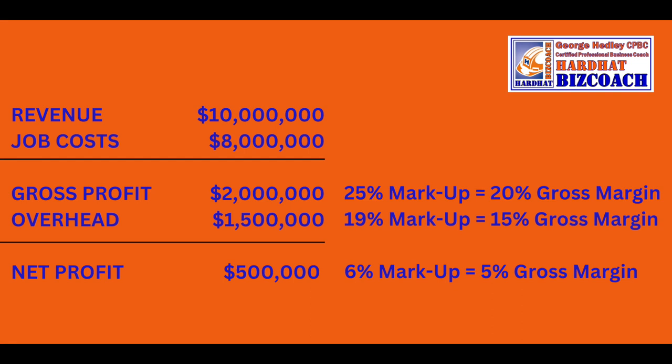The example we're going to use today is revenue of $10 million, job costs of about $8 million. That leaves a gross overhead and profit margin of $2 million. If your overhead is $1,500,000, your net profit is $500,000. So what's your markup? Your gross profit of $2 million, comprising overhead of $1,500,000, divided by $8 million job costs is about 19%. And your net profit of $500,000 divided by $8 million job costs is about 6%. Those total about 25% total markup — that's the example we'll use for this workshop on how to calculate your overhead and profit.